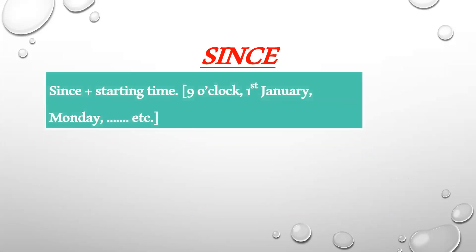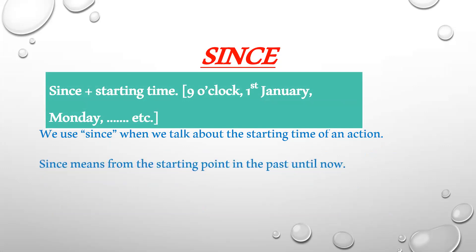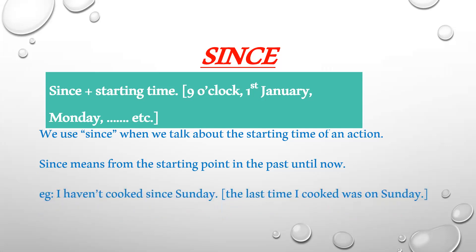Now 'since.' We use 'since' with the starting time of an action — since nine o'clock, since the first of January, since Monday, and so on. 'Since' means from the starting point in the past until now. For example: 'I haven't cooked since Sunday' — the last time I cooked was on Sunday, so that was the starting time of me not cooking.